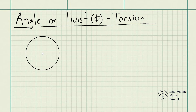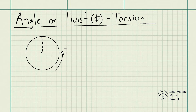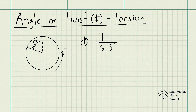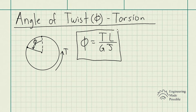Let's say we have a circular shaft and we have a torque T being applied to it. The original position at this particular point, with the torque being applied, actually deforms and rotates or twists all the way to a new point. So it changes the angle from the original location because it deforms. This is your angle of twist phi. The equation for the angle of twist is equal to the torque times the length of the shaft divided by the shear modulus and the polar moment of inertia.